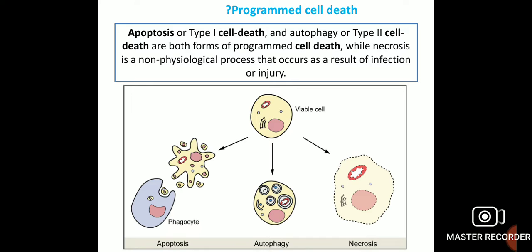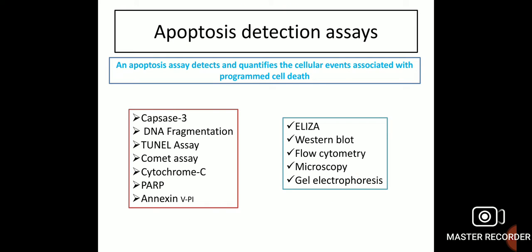The assays used for detection of apoptosis detect and quantify cellular events associated with programmed cell death. These include caspase-3 detection, DNA fragmentation, TUNEL assay, comet assay, cytochrome C assay, and PARP assay.